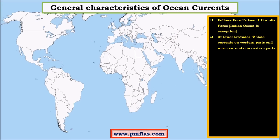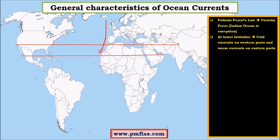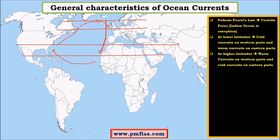At lower latitudes, cold currents flow on the eastern parts of the oceans, moving from the poles towards the equator. On the western parts of the oceans, warm currents move from the equator towards higher latitudes. At higher latitudes, warm currents are observed on the western parts of the oceans, eventually mixing with cold currents. On the eastern parts of the oceans at higher latitudes, cold currents dominate.